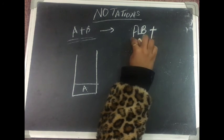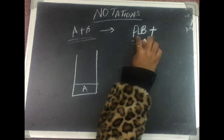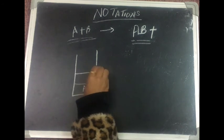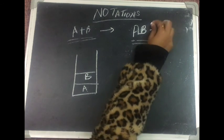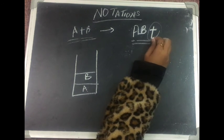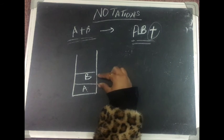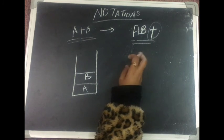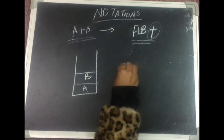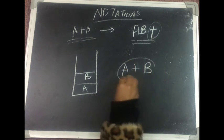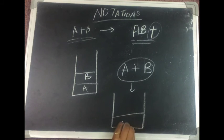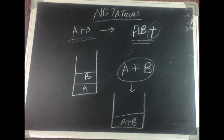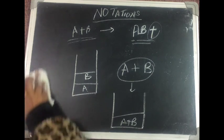Scanning the postfix expression from left to right: I push a into the stack, then I push b into the stack. Whenever I encounter an operator, I pop the top two elements of the stack, perform the operation on them, and push the result back into the stack. This will store a plus b.